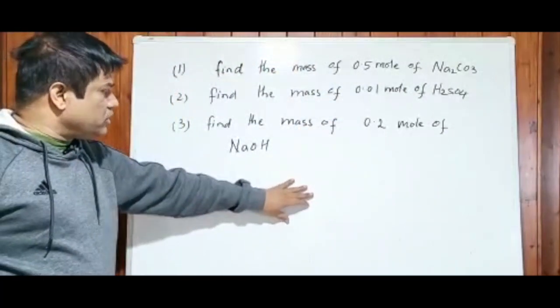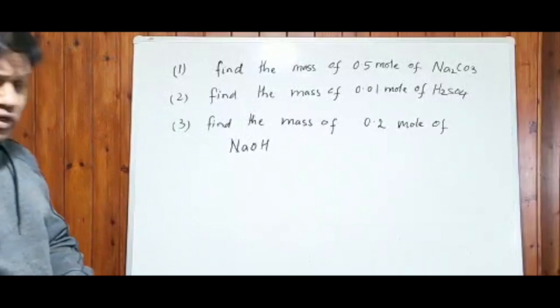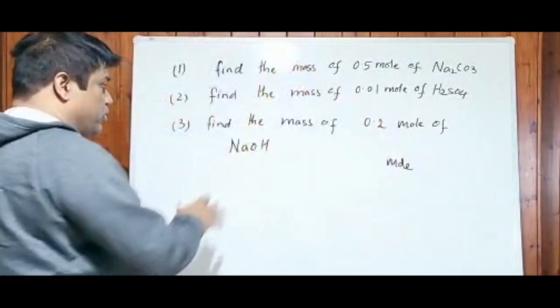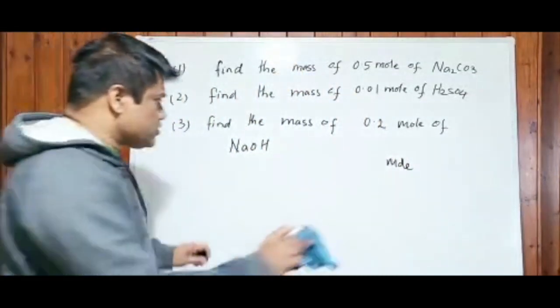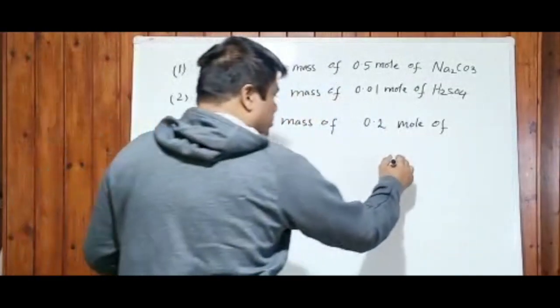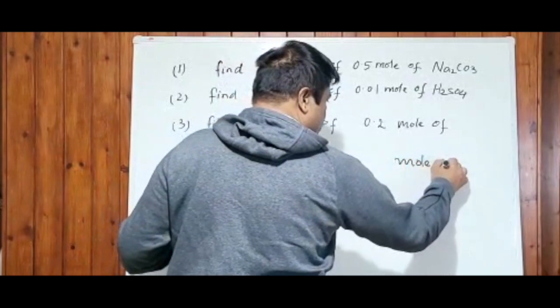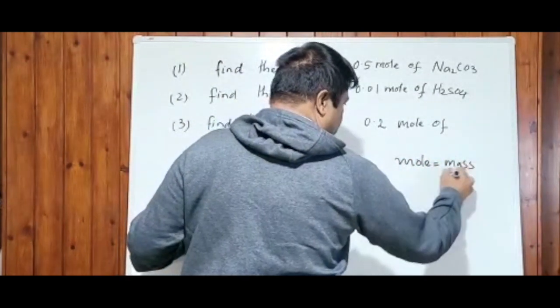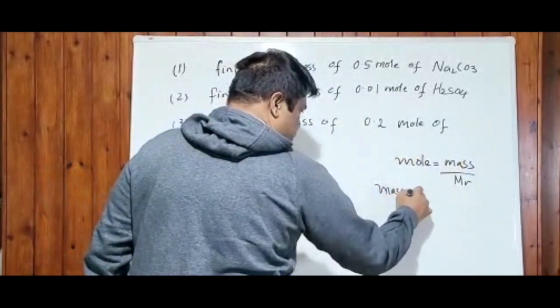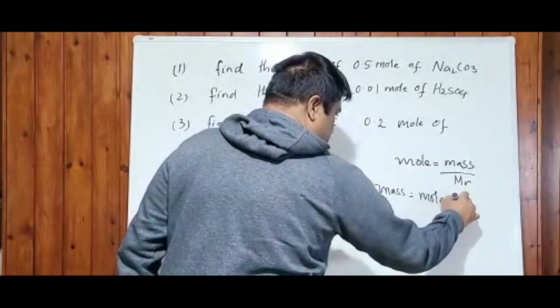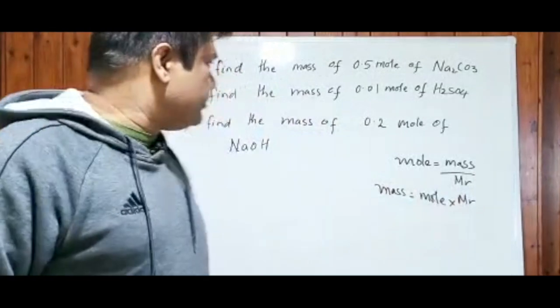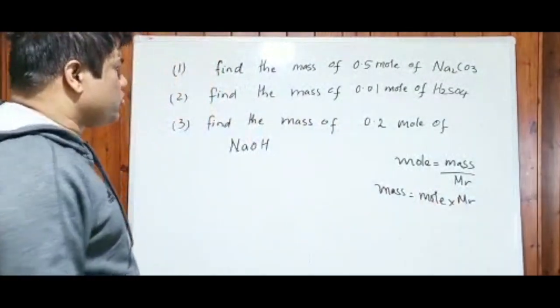So mole - because these all are compounds - mole equals to mass over MR. We will write the important number: 0.5 mole of sodium carbonate.